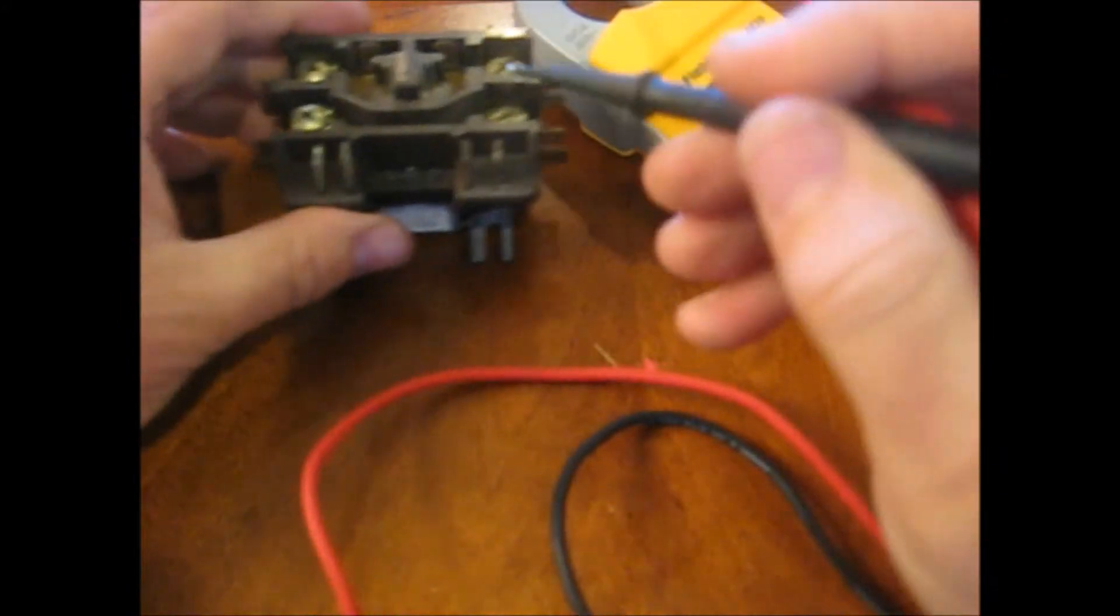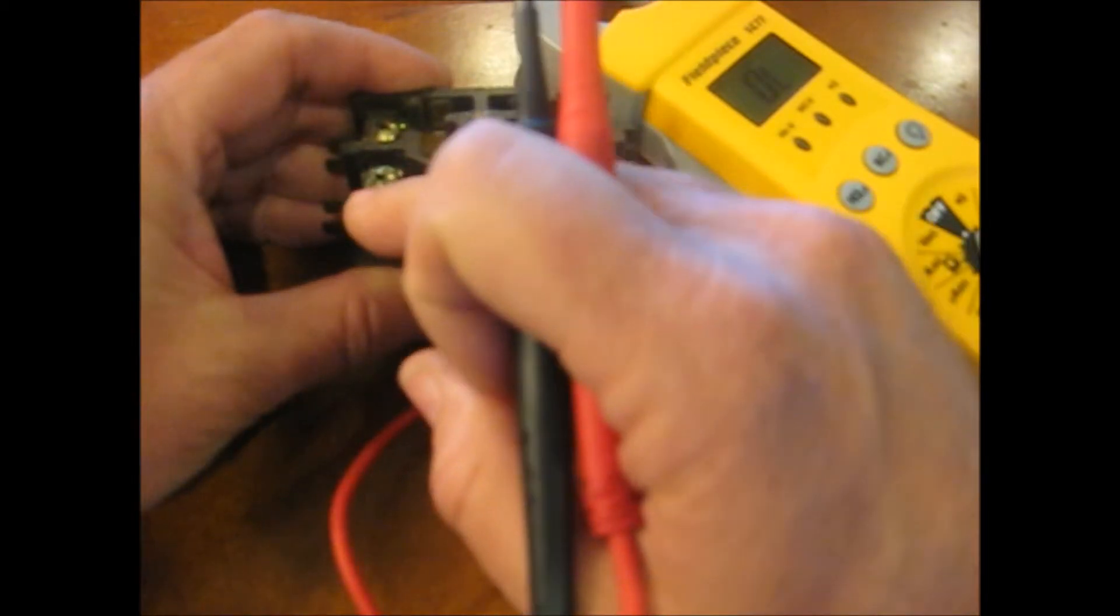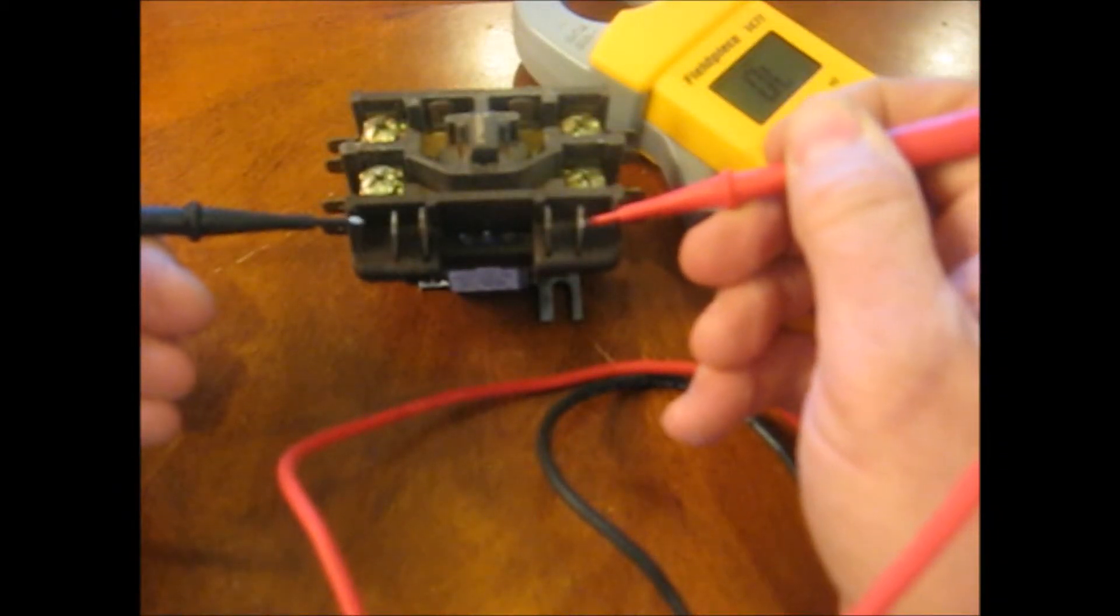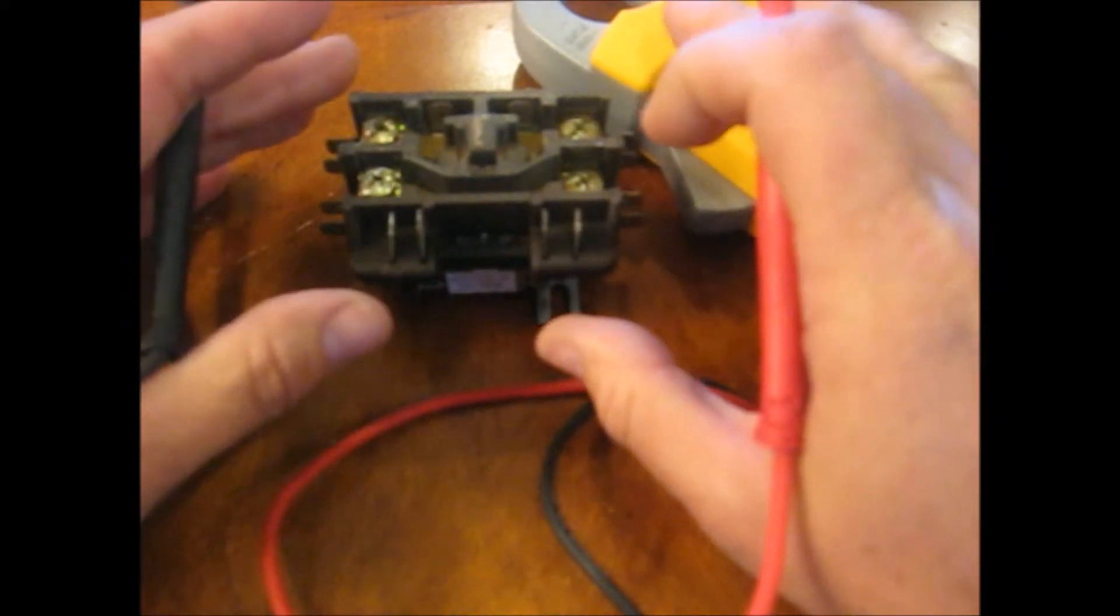Now we're going to test the coil by checking to see if this connection here or terminal here through the coil leads back and has a full connection to the other terminal here. So we just do that by touching and sure enough we do have full continuity through the coil. So that part checks out.